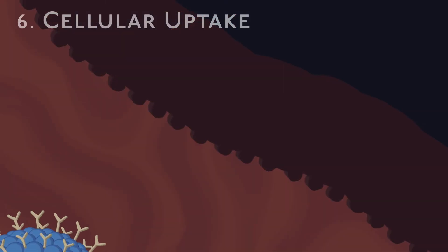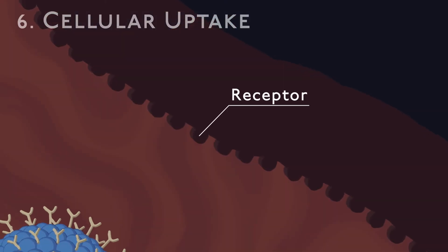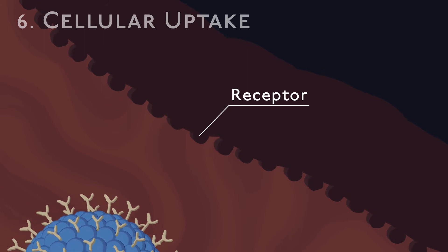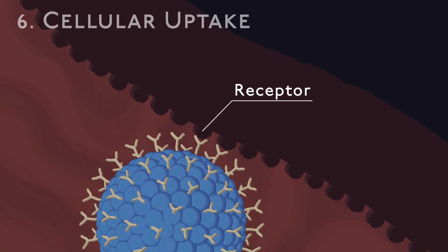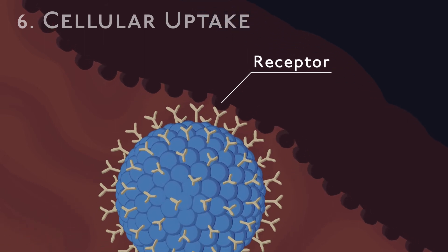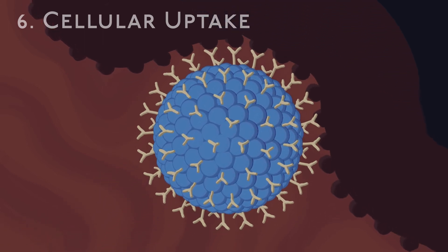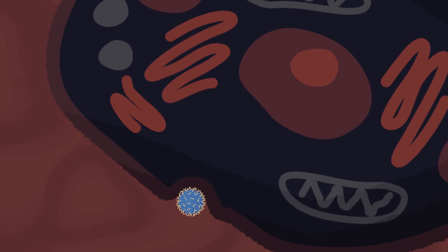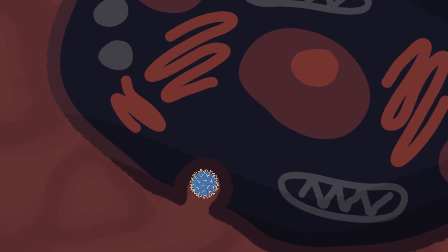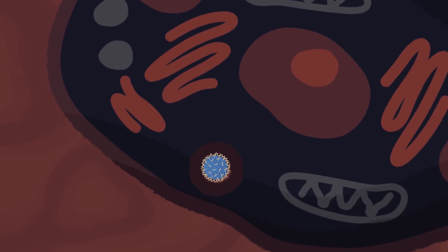Once a nanoparticle arrives at the tumor cell, the ligands interact with receptors on the tumor cell walls. This allows endocytosis to occur and the nanoparticle can enter the cell.